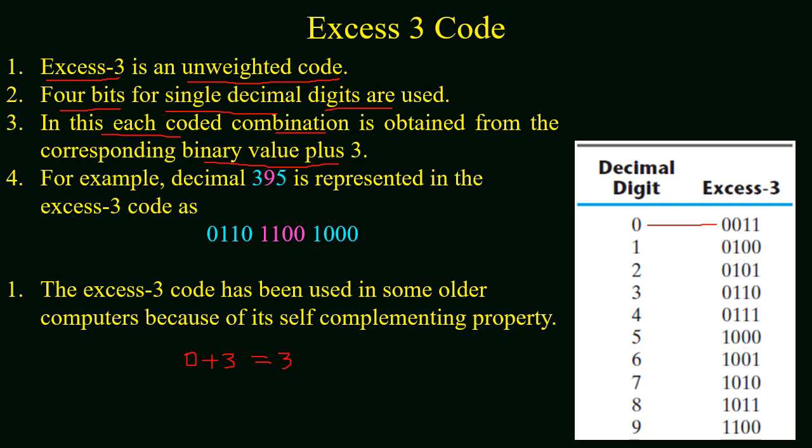Or if we have decimal 7, for its XS3 code we will add 3. 3 plus 7 will give us 10. Now we will find the binary of 10, that will be 1010, and this will be the XS3 code of 7. Now XS3 codes for decimal numbers from 0 to 9 are given in the table.